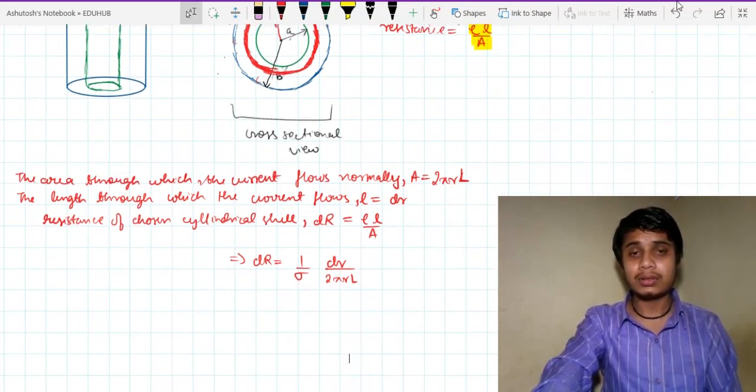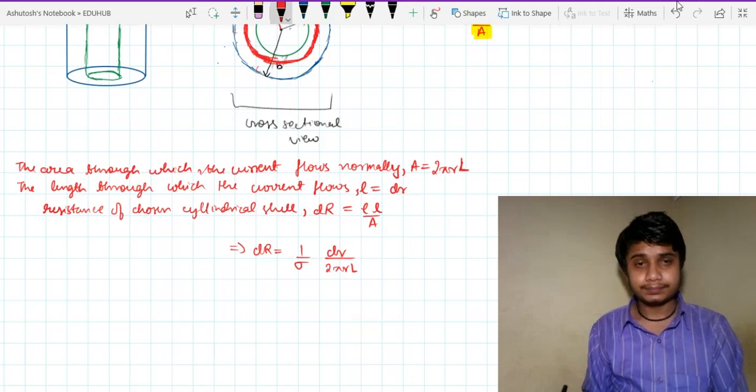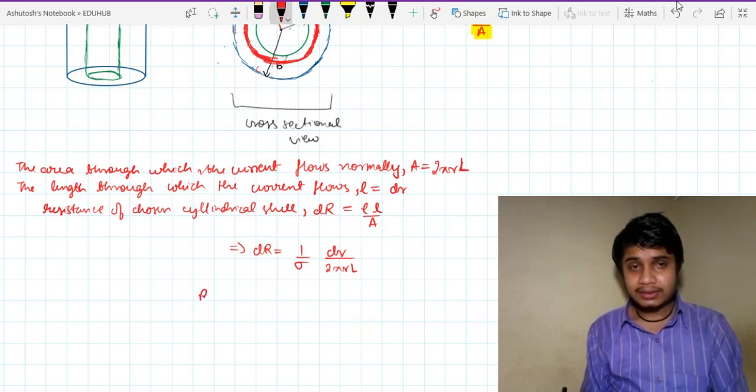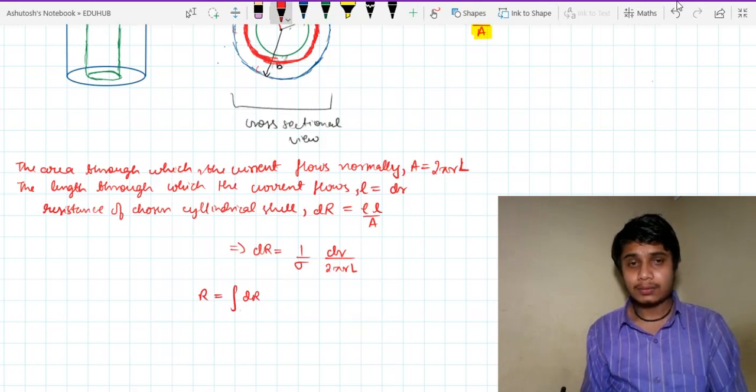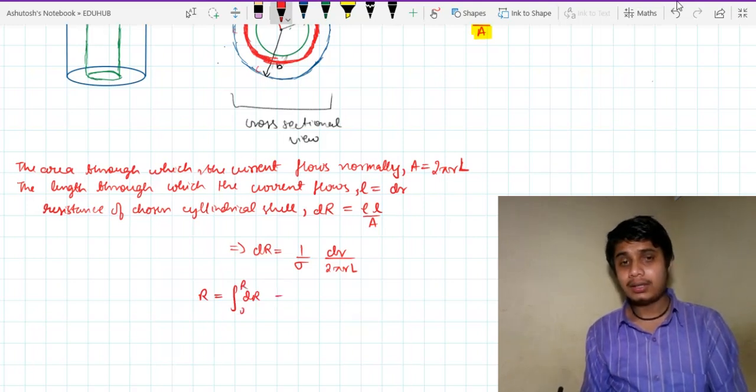Let me just scroll down and the total resistance R will be integration dR and on the right hand side the integration will be 1 by sigma.